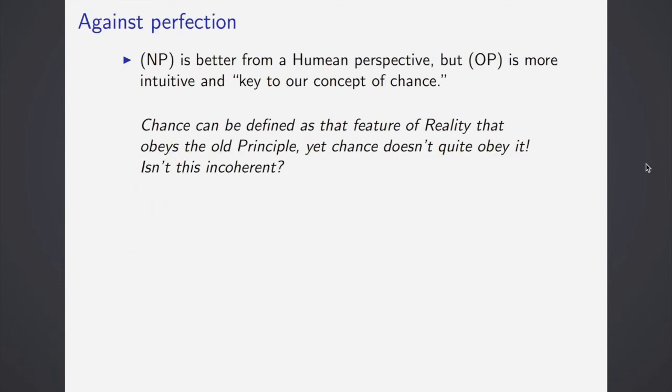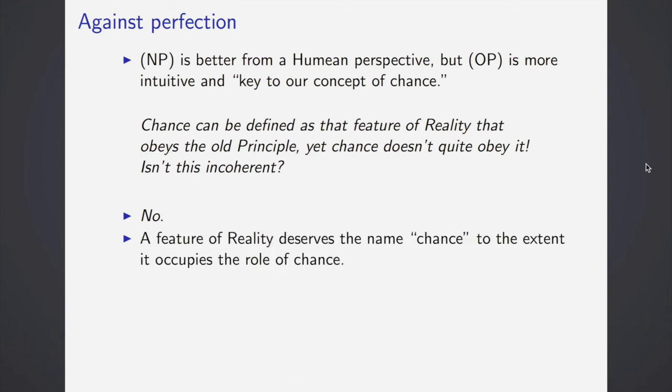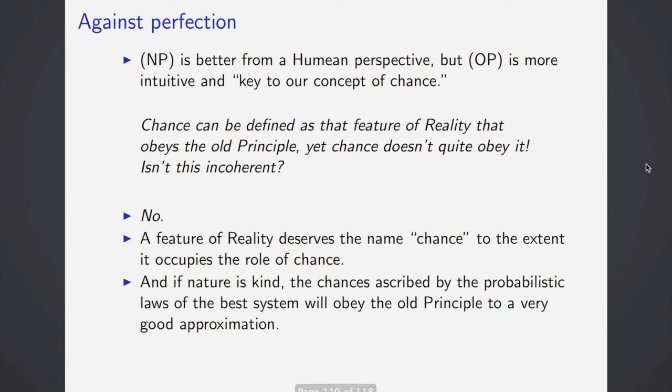Lewis says that the new principle is better from a Humean perspective, but the old principle is more intuitive and key to our concept of chance. And he says of this that chance can be defined as that feature of reality that obeys the old principle, yet chance doesn't quite obey it. He asks if this is incoherent, and answers no. A feature of reality deserves the name chance to the extent it occupies the role of chance, and if nature is kind, the chances described by probabilistic laws of the best systems will obey the old principle to a very good approximation. Therefore, they will occupy the chance role enough to deserve the name. And he says that to deny this would be silly.